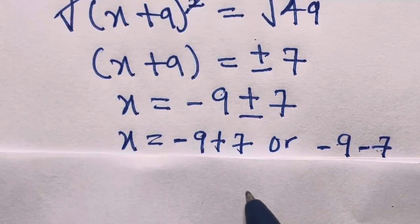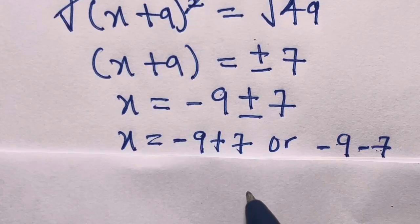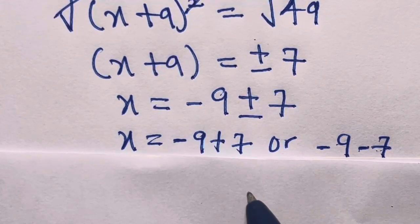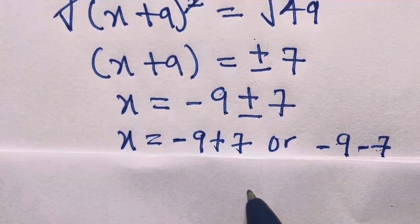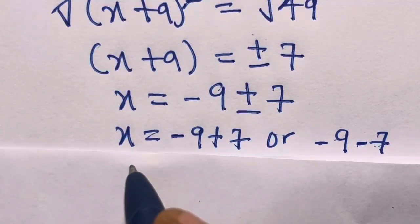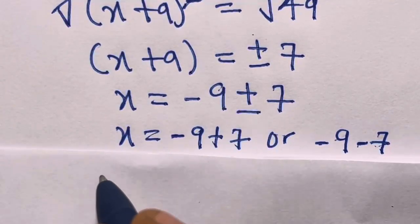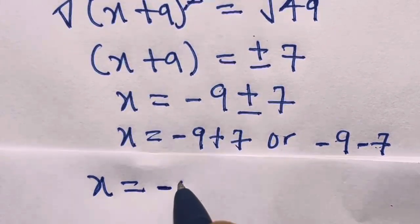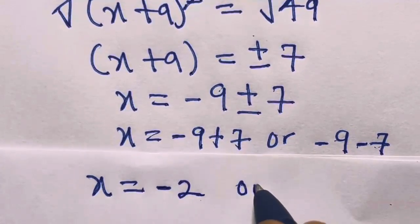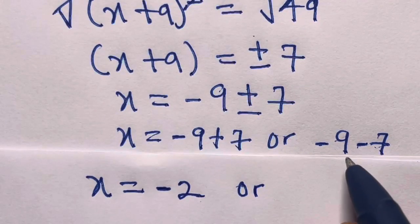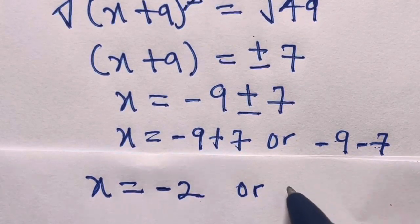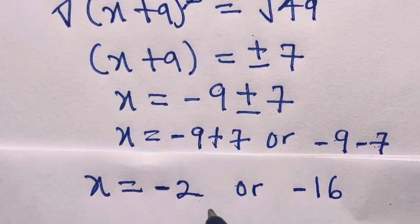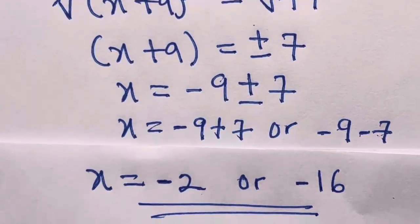Before we move forward, if you can support this channel it helps me create more content you love, and I will give you a shout out in my next video. So, x equals minus 9 plus 7 gives us minus 2, or minus 9 minus 7 gives us minus 16. We get the same values as the first method.